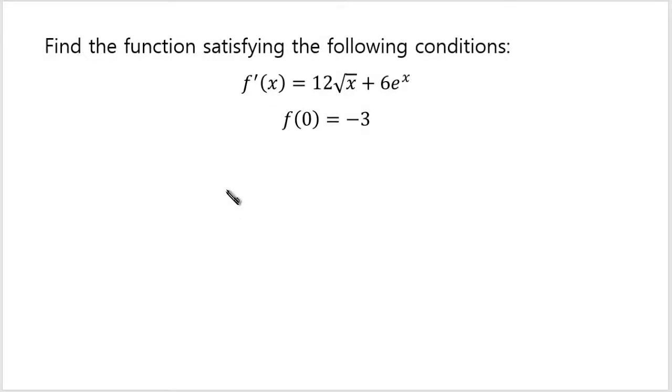Find the function satisfying the following conditions. You have a function whose derivative is this and it has this initial condition. F at 0 gives you negative 3.